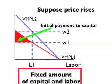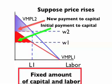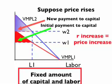Now we need to look at the payments to capital. The red triangle is the initial payment to capital. Total revenue has increased proportionately by the amount of the price change. The wage is proportionately equal to the price change, and the blue triangle rises also proportionately to the change in price. In other words, R increases by the same amount as the price increase.